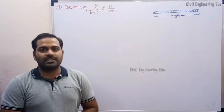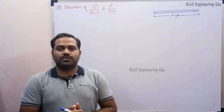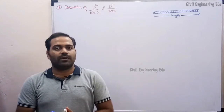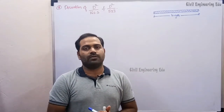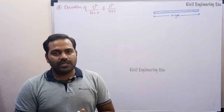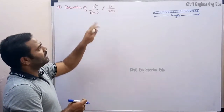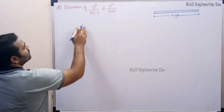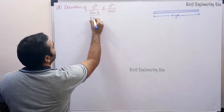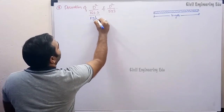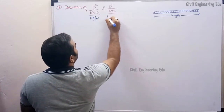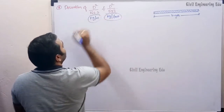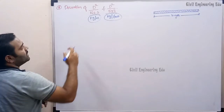Hello everyone, welcome back to our channel Civil Engineering Education. Today in this video I am going to discuss the formulas D² / 162.2 and D² / 533 — formulas used to find out the weight of a steel bar per meter length and per feet respectively. Let us see how to derive these formulas.